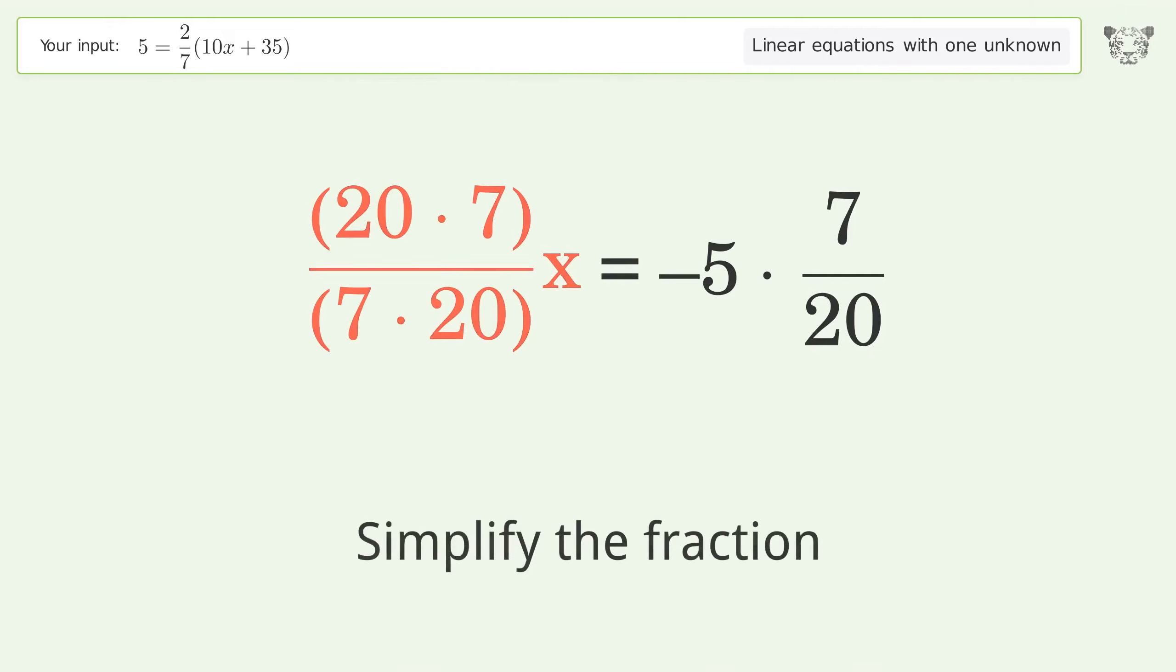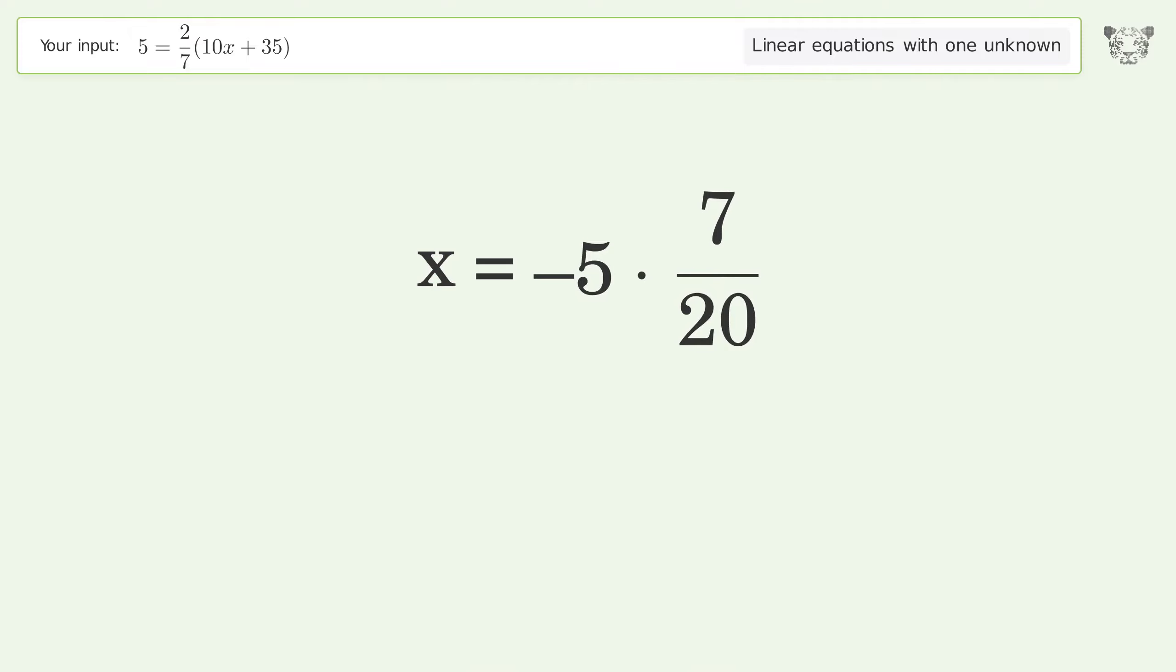Simplify the fraction. Multiply the fractions. Simplify the arithmetic. And so the final result is x equals negative 7 over 4.